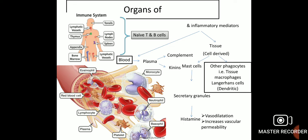There are two types of inflammatory mediators based on their location. Cell-derived mediators from tissue include mast cells, which secrete histamine from secretory granules — responsible for vasodilation and increasing vascular permeability — and tissue macrophages, also called Langerhans cells or dendritic cells. Plasma-derived mediators from blood include complement and cytokines.